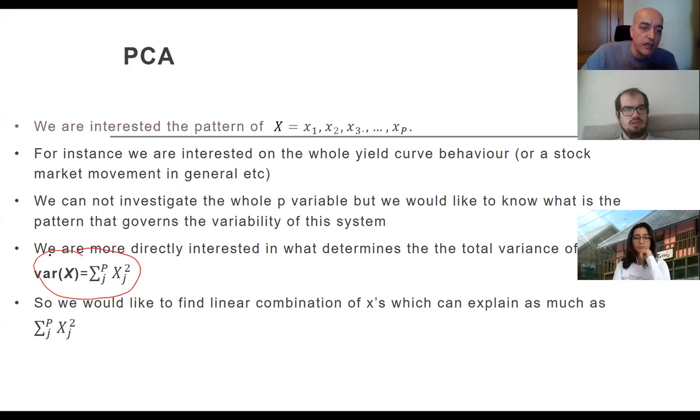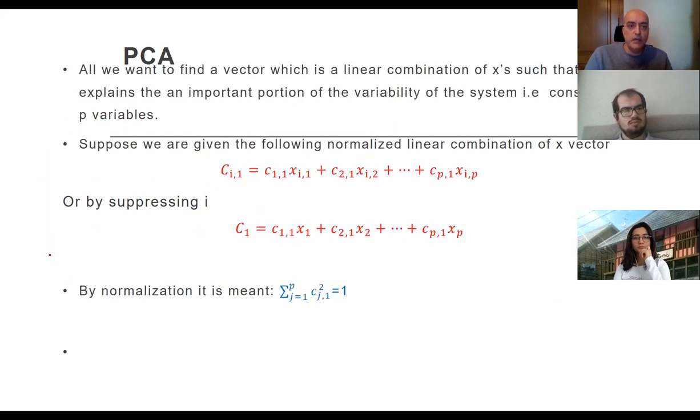What governs the variability of the system? Here, what we are more interested in is the variance of X - the whole variability of X. What determines that? In order to understand, follow, and explain that variability, we would like to focus on some linear variable which has a dimension less than P.